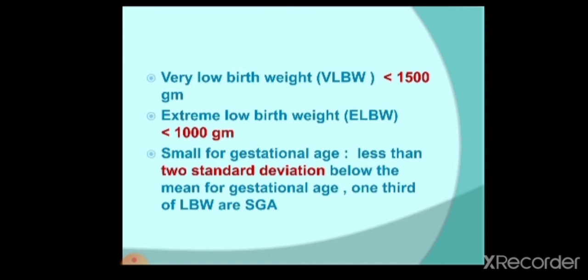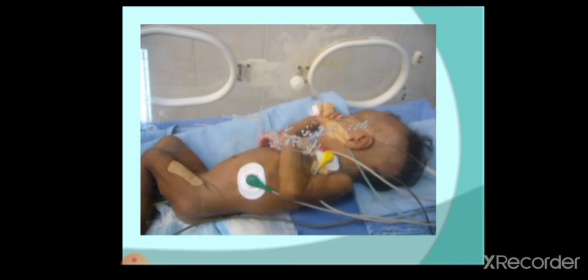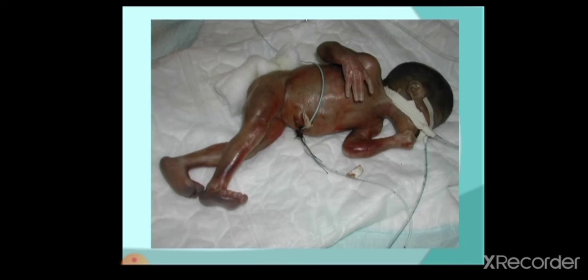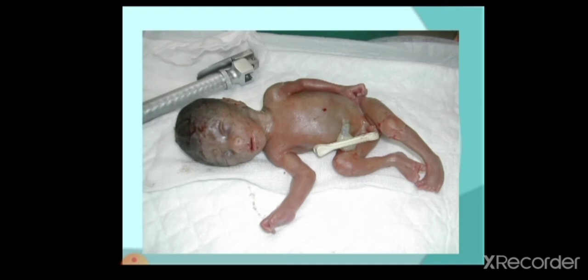Small for gestational age refers to those whose weight is less than 2 standard deviations of the mean. Low birth weight means weight less than 2.5 kilos. Very low birth weight means weight of 1.5 to 1 kilo. Extreme low birth weight means weight less than 1 kilo.